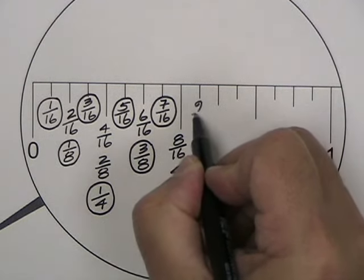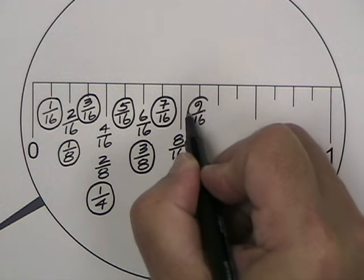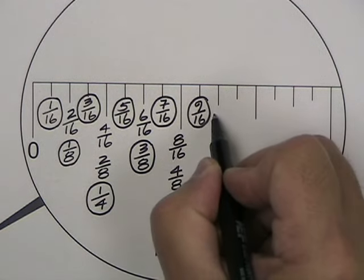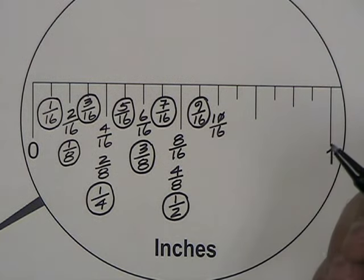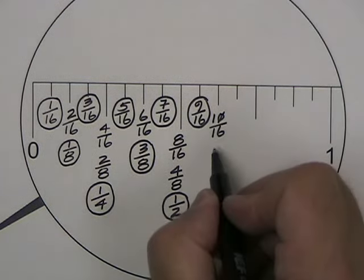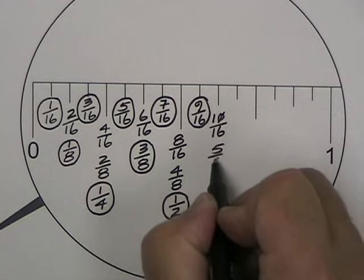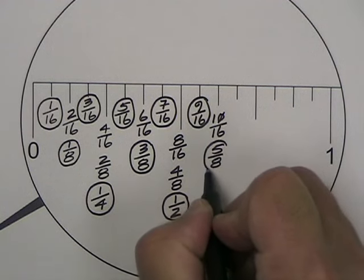Nine sixteenths can no longer be broken down any further so that remains as nine sixteenths. Ten sixteenths, if the top and bottom are divided by two, you will get five eighths. And that is how we normally call ten sixteenths.